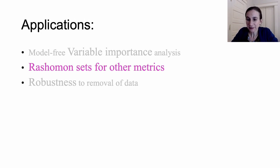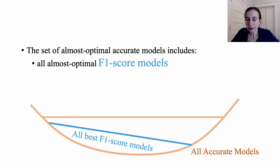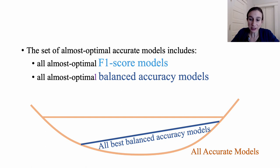Now the second application is to find Rashomon sets for other metrics. Our code generates Rashomon sets for accuracy, so get all the sparse accurate models, but what if you cared about F1 score or balanced accuracy? Now we have theorems in the paper that prove that the Rashomon sets for other performance metrics are contained inside the Rashomon set for accuracy. So we can get a Rashomon set for F1 score if we can get one for accuracy. And we can also find a Rashomon set for balanced accuracy, again using the accuracy Rashomon set.